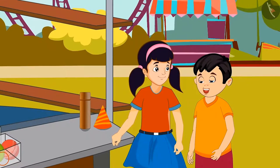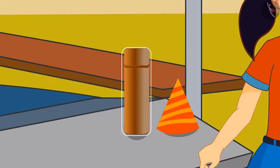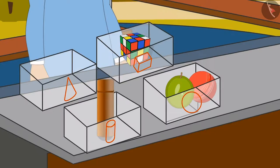And now we have to find something that looks like a cylinder. And I will find this item Neha. Children, can you help Chotu find something similar to the shape of a cylinder? You thought right children. This object looks like a cylinder. Chotu put the cylinder-like object in this box.